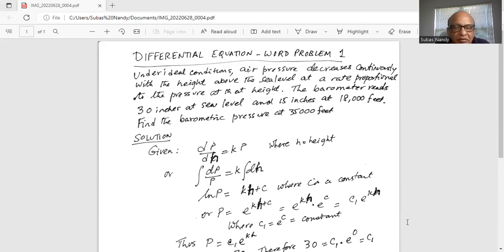Now we can separate the variables and we get dp over p is equal to k times dh on the right hand side. We integrate on both sides to get ln of p is equal to kh plus c, where c is the constant.